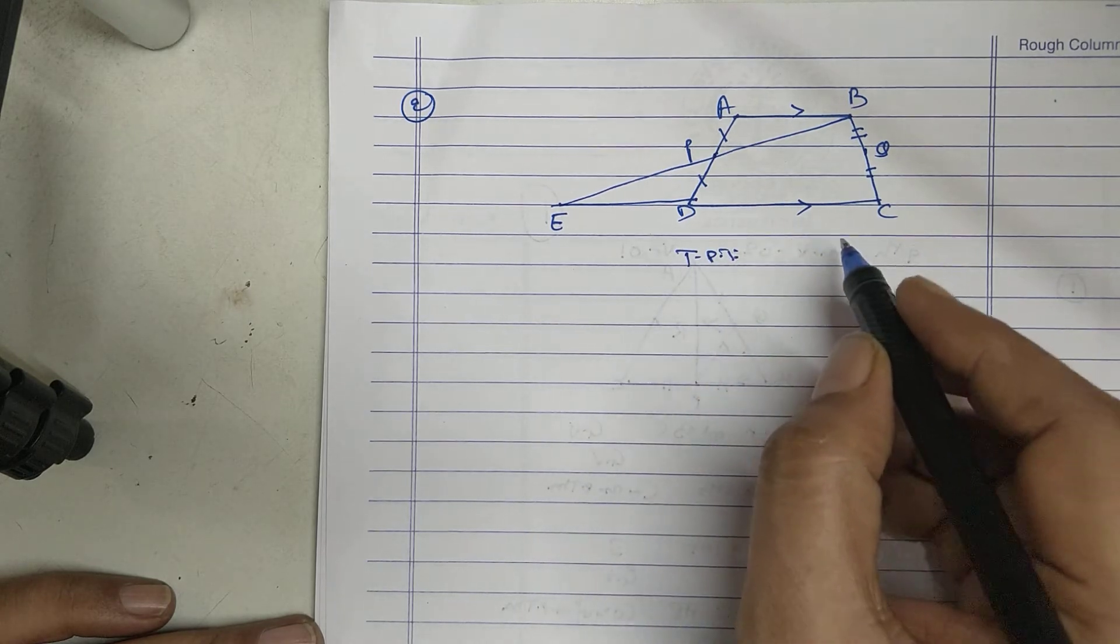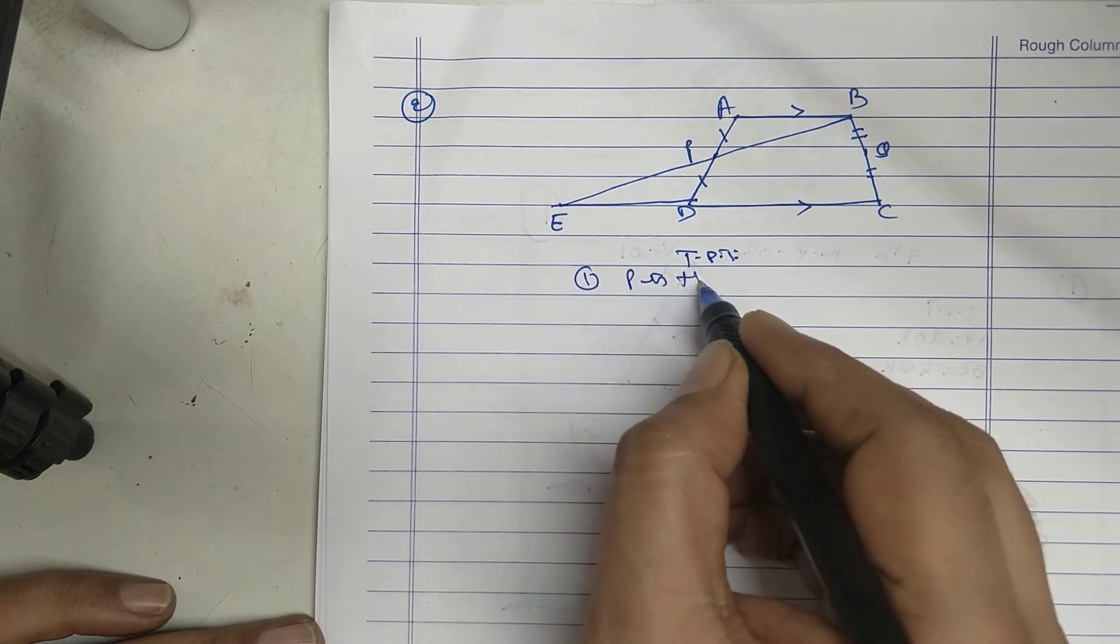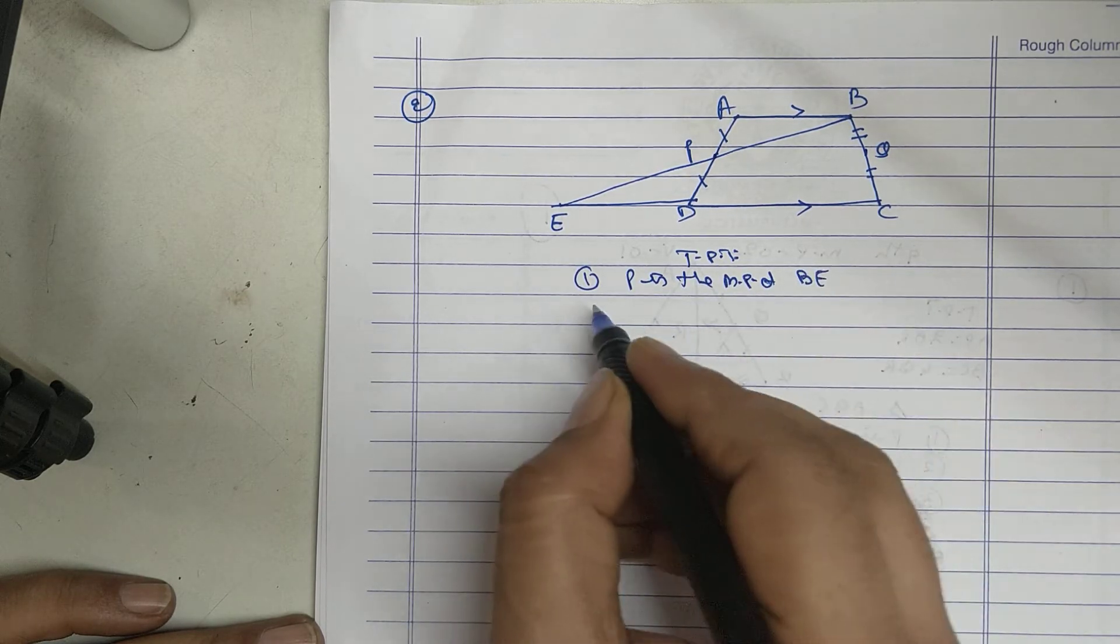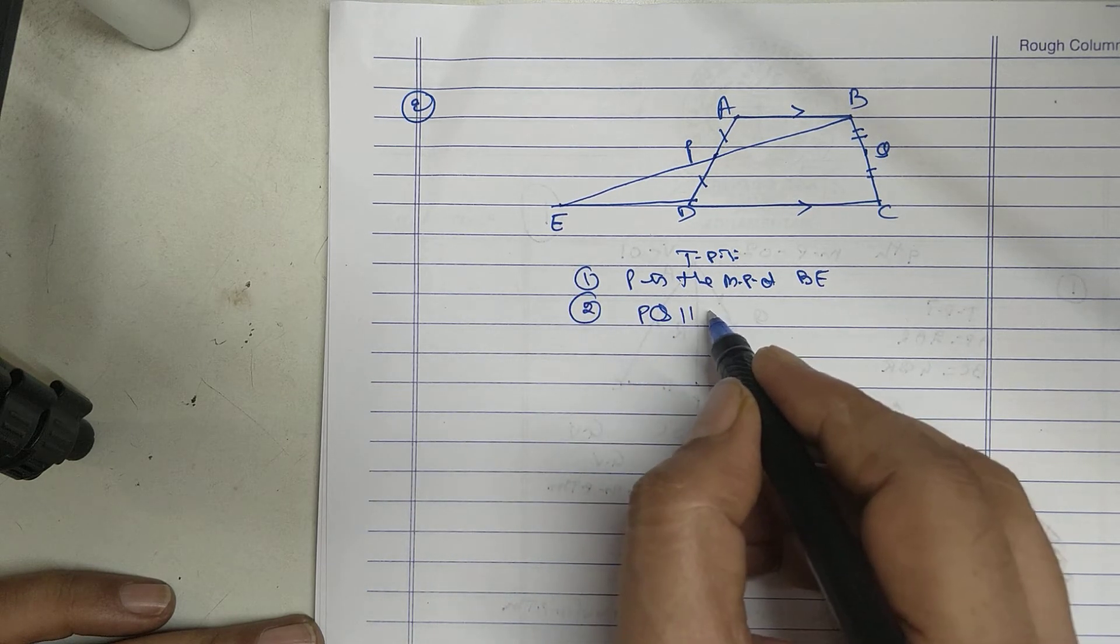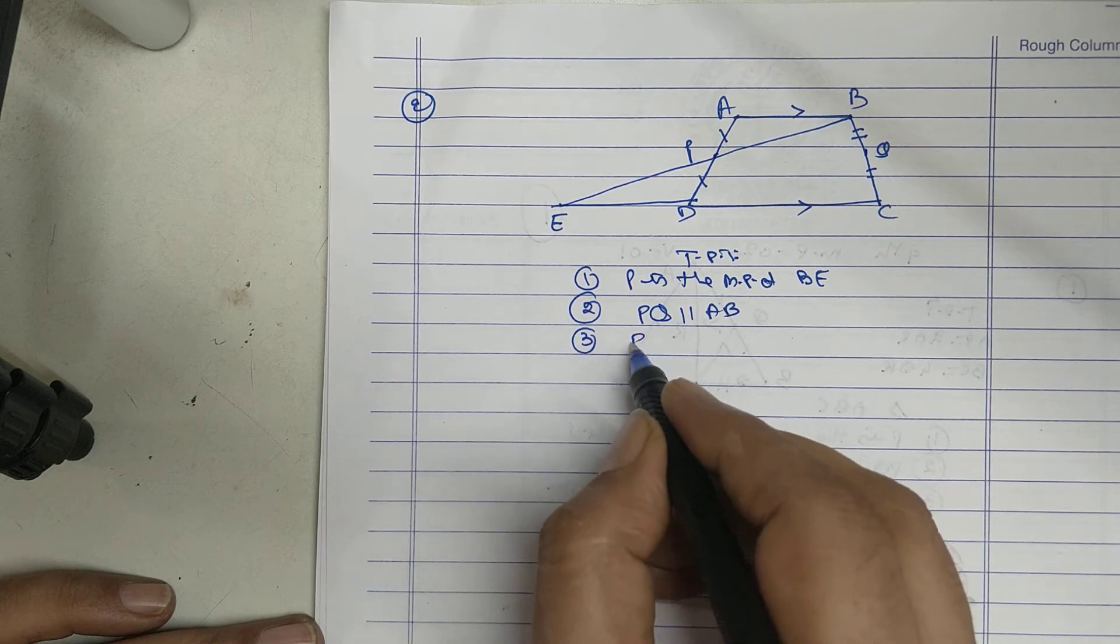I have to prove that first, P is the midpoint of BE. PQ parallel to AB and PQ is half of DC plus AB.